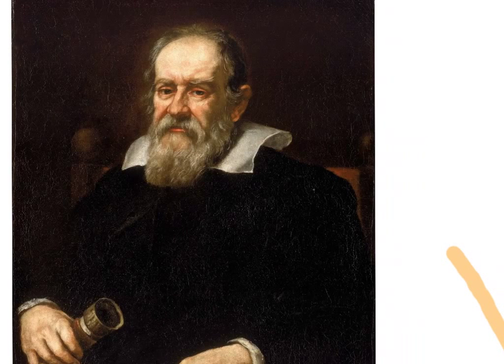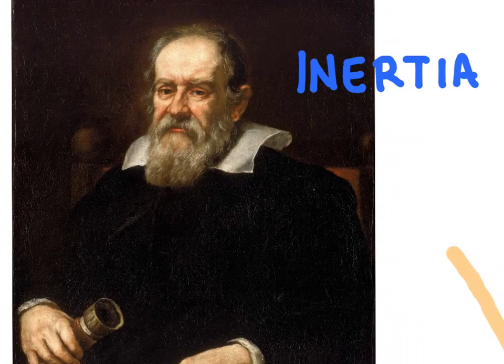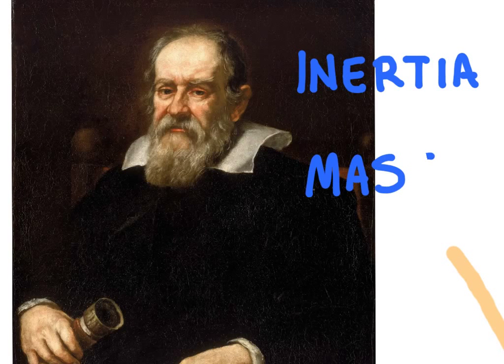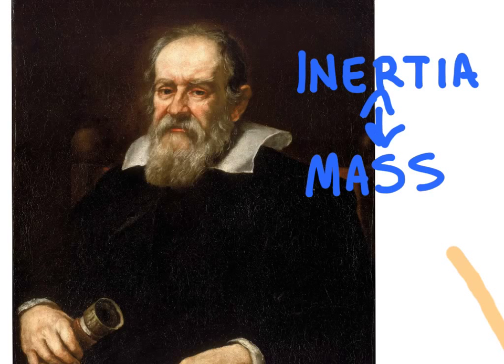Galileo developed a concept called inertia. Inertia is a term used to describe the ability of an object to resist changes in motion. If an object is at rest, it wants to stay at rest. But also if an object is moving, it wants to keep on moving. Now inertia is directly related to mass. A more massive object is going to have more inertia. In other words, more tendency to remain in its current state of motion, whether it's at rest or already moving.